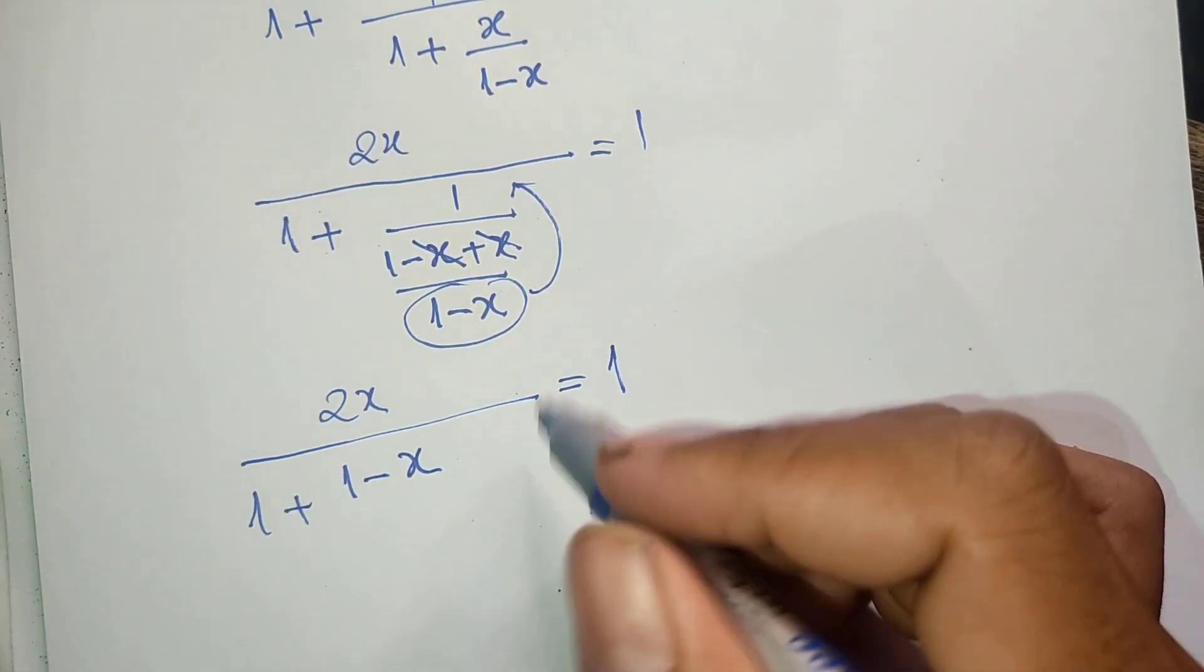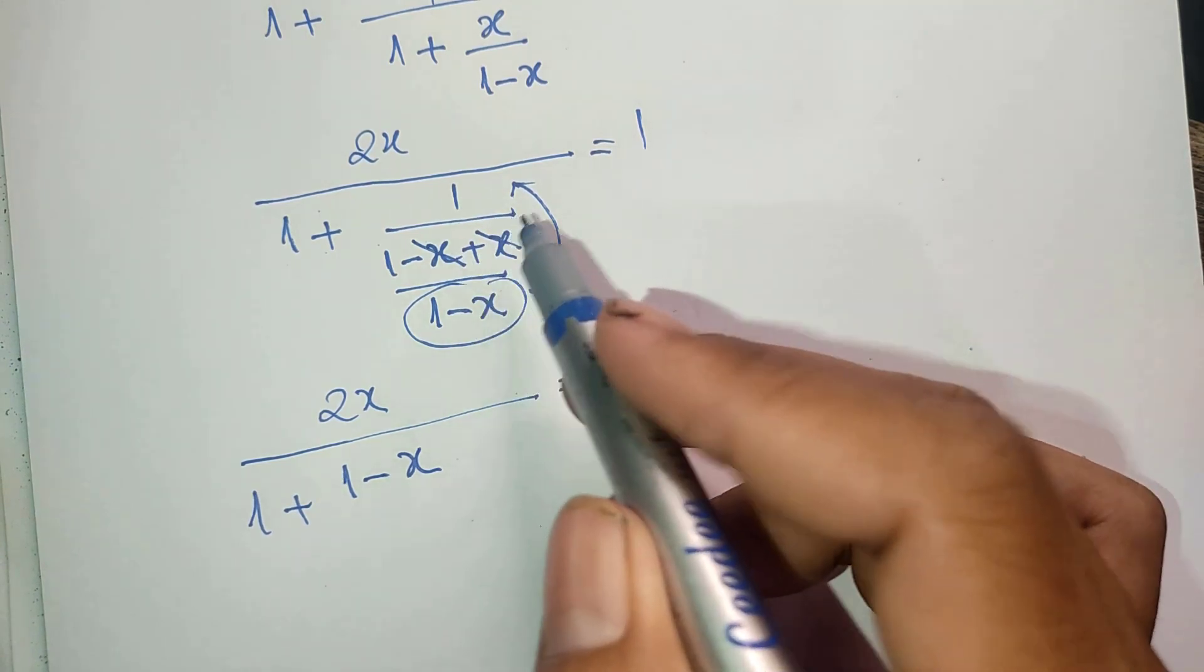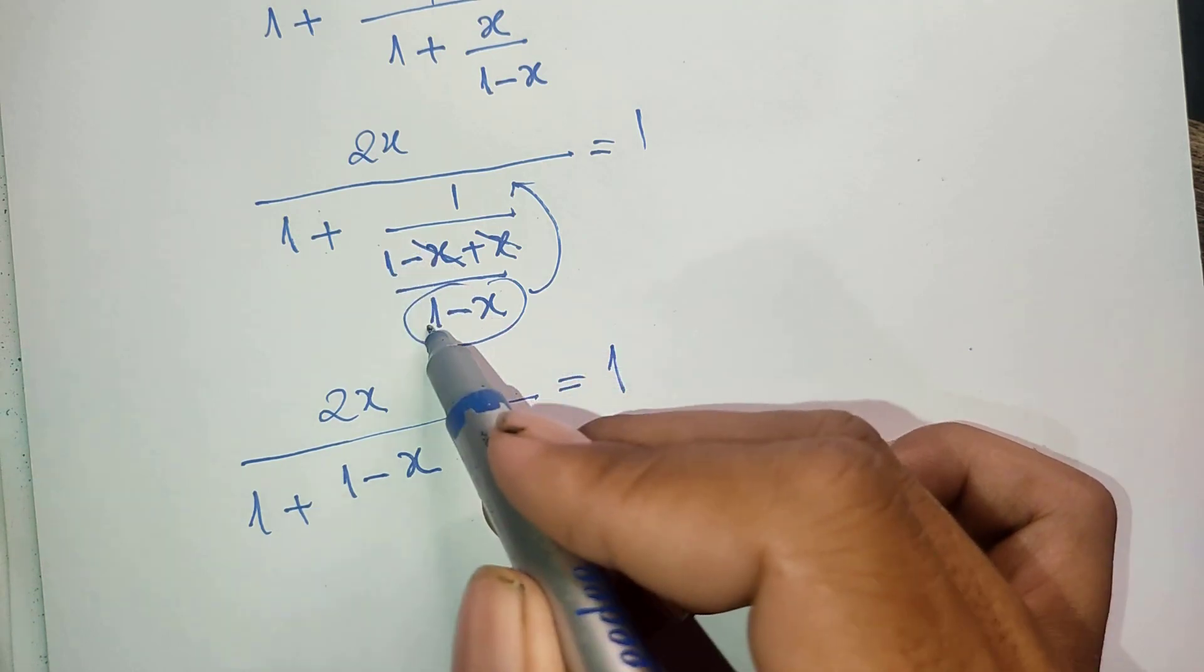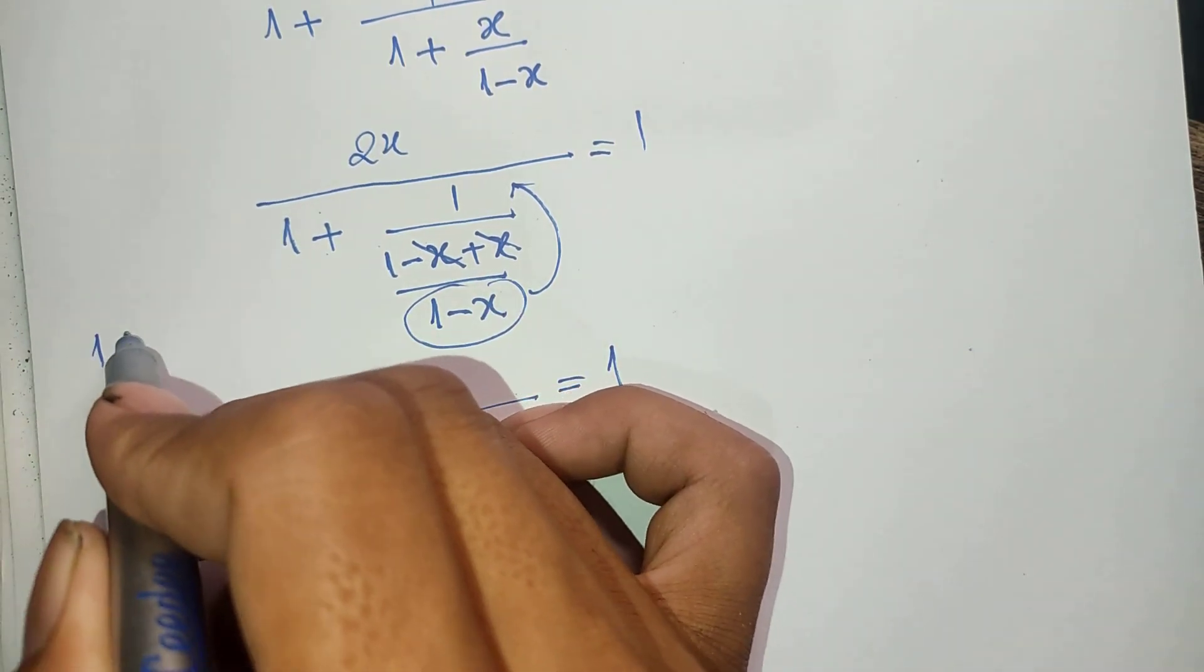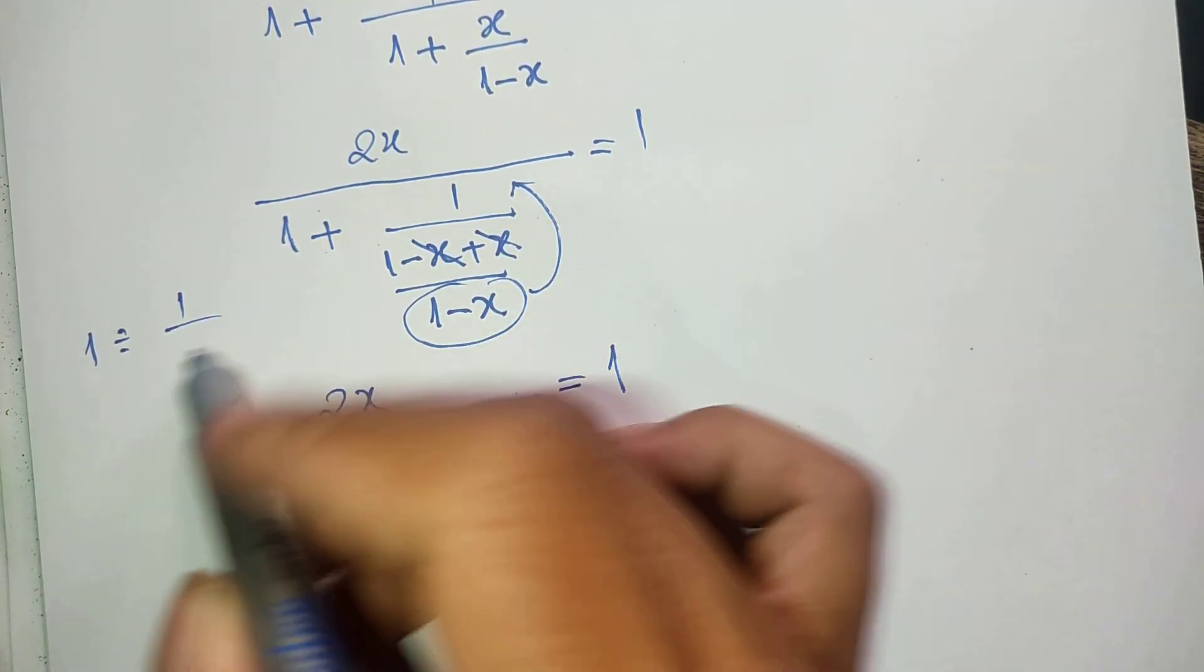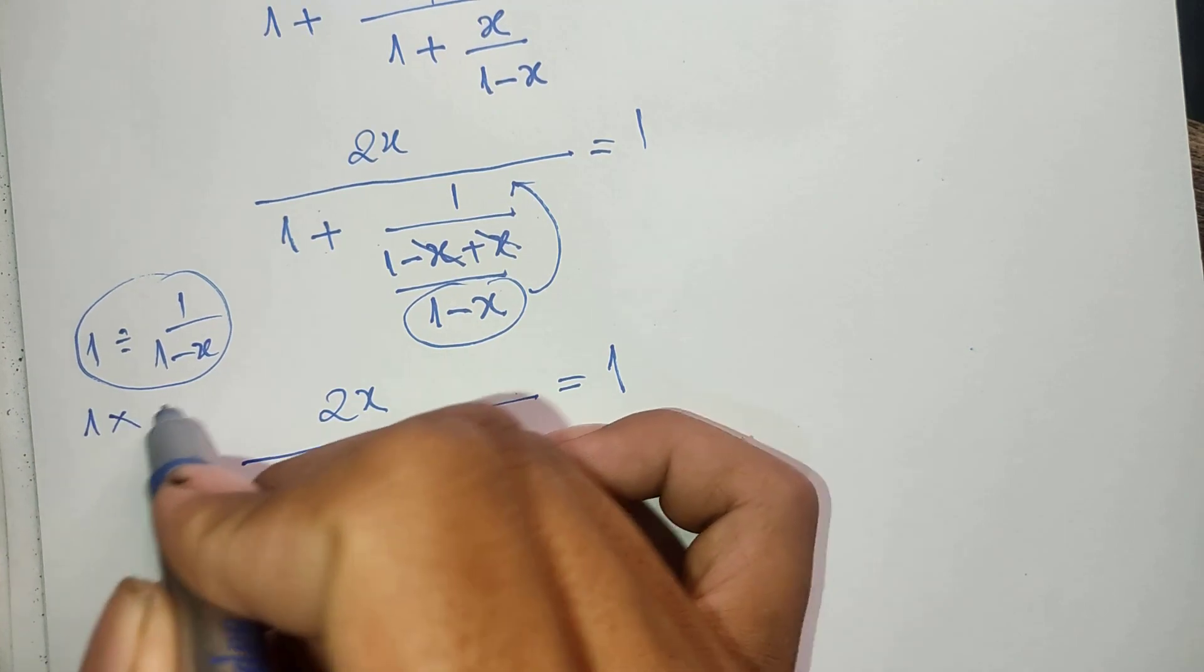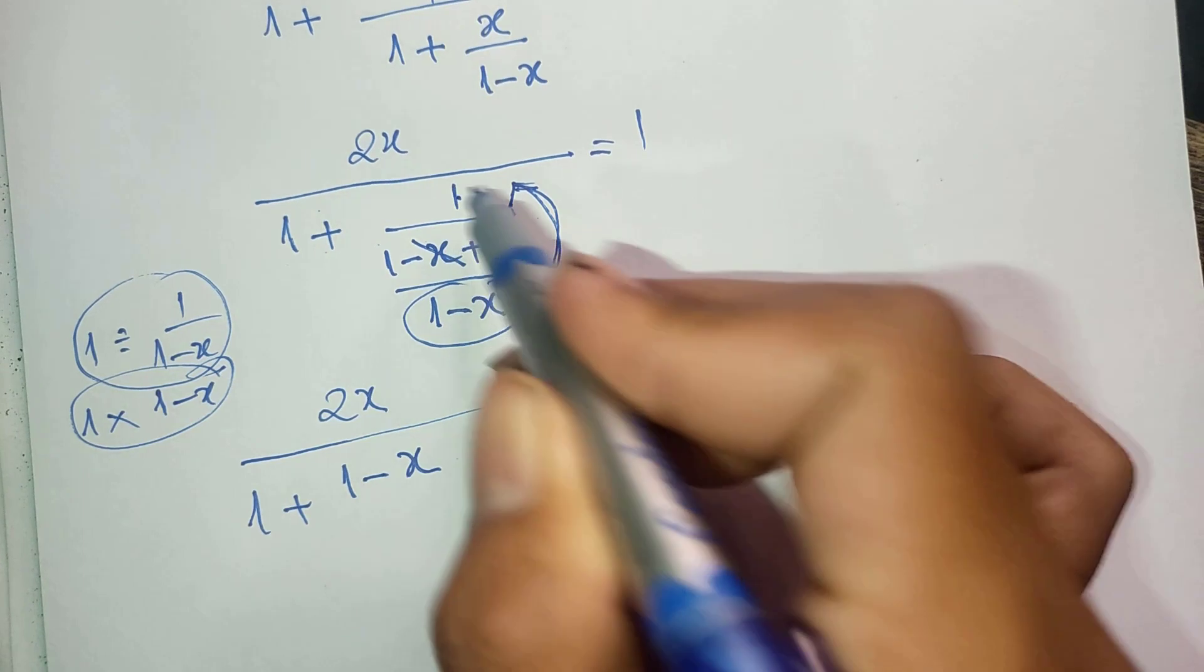And this by we use the rule that we have 1 divided by 1 minus x. And so it is equal 1 and multiply 1 minus x. Okay, this, this we take is and multiply with 1 and so it's equal 1 minus x.